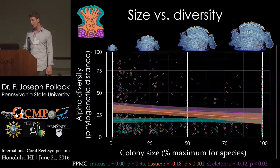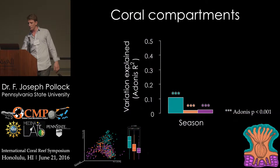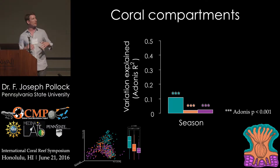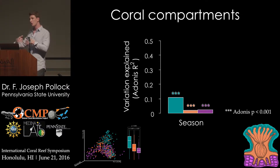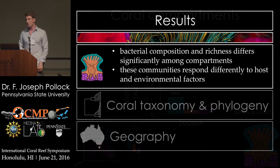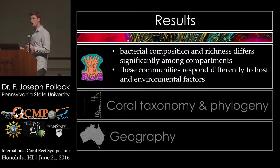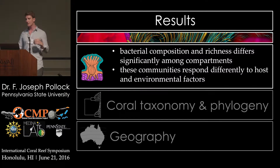On the other hand, if we look at the impact of seasonality, we see that a great amount of microbial variation is explained by seasonality in the mucus compartment, and we see less of an impact of seasonality on the tissue and on the skeleton. That makes sense — the mucus is going to be in the most intimate contact with the overlying surface water. In summary, we see differences in bacterial community composition and richness between compartments, and the microbial communities in these compartments are responding differently to both host and environmental factors.